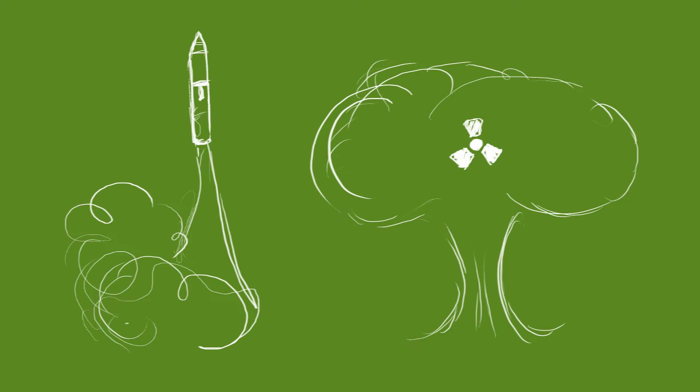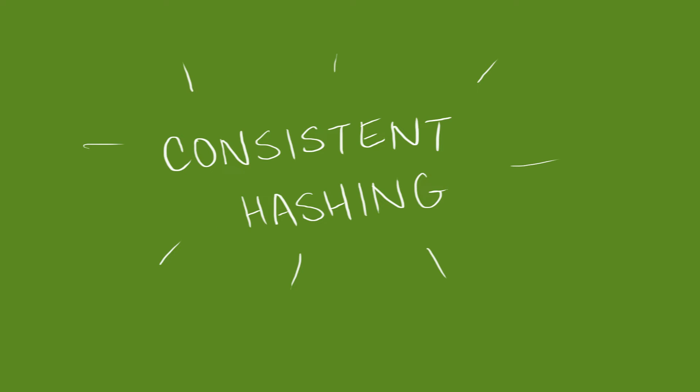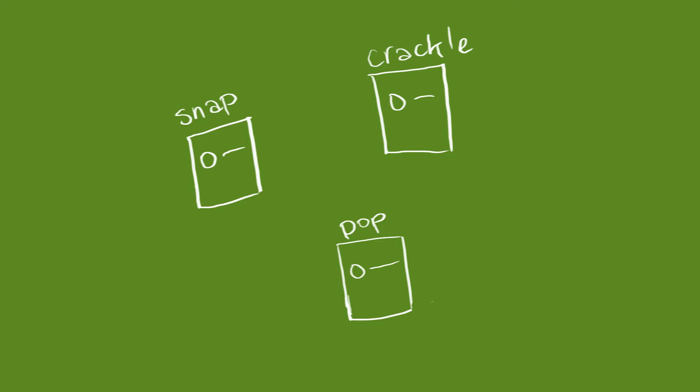We'd like to have a hashing scheme that allows us to add or remove a server without having to change the hash function. That's the point of consistent hashing. Let's say we have three servers: snap, crackle, and pop.